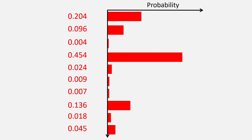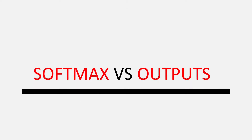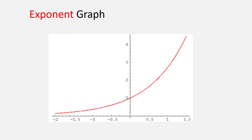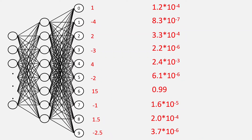So the output we get is the predicted probability distribution. Now let's see how the outputs of the softmax function depend on the outputs of the neural network. As you can see here, greater the value in the output neuron, greater the value in the softmax function. The reason is that the exponent function is an increasing function. One more important thing to note is that even when the output value is very large, our softmax still predicts a value that is less than 1 for that output.